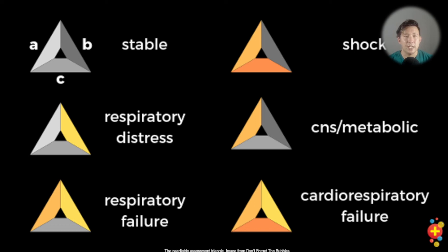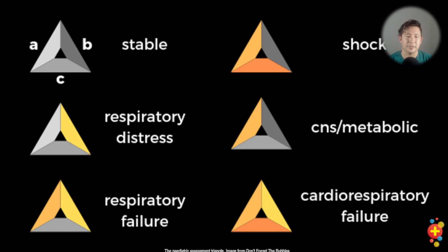Don't forget the Bubbles infographic about the pediatric assessment triangle shown here. If A, B, and C are all normal, the child is stable and probably not unwell. Abnormalities in appearance and circulation suggest shock; abnormality in breathing only suggests respiratory distress; appearance and breathing together suggests respiratory failure. Normal breathing and circulation with abnormal appearance — for example abnormal tone — might indicate a central nervous system problem or something like DKA. If everything is going wrong, you get cardiorespiratory failure and all three parameters change.